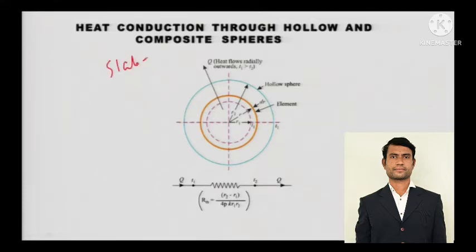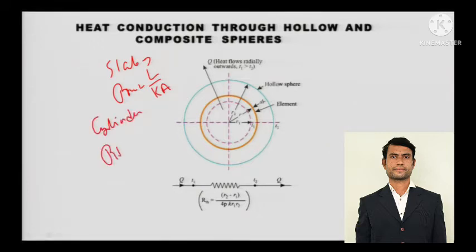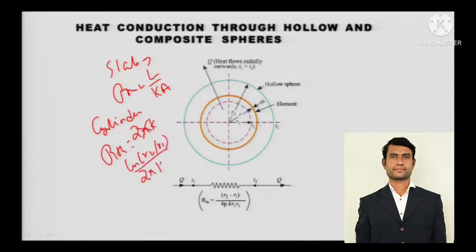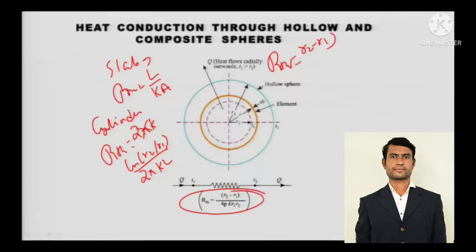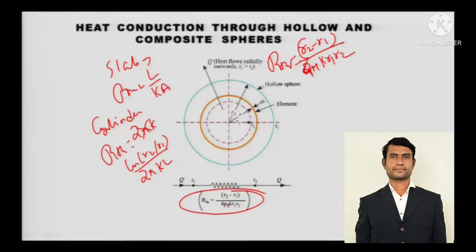As a recap: for a slab, R_th = L/(kA); for a cylinder, R_th = ln(r2/r1) / (2πkL). Now for the sphere, the thermal resistance is R_th = (r2 - r1) / (4πk·r1·r2), where the 4π uses pi.